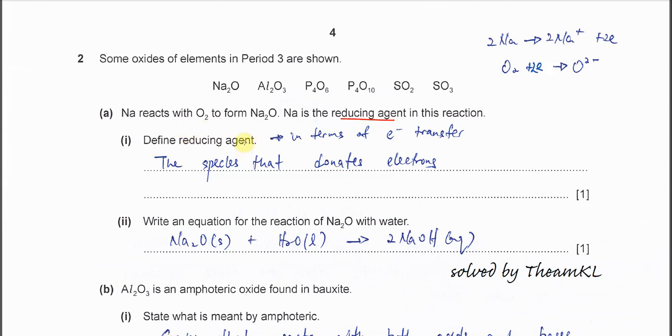When we try to define reducing agent or oxidizing agent, we need to define in terms of electron transfer. You have to answer it's either donate electron or it gains electron. Since sodium is the reducing agent, it means sodium after it reacts with oxygen will form sodium ion, releasing electrons from sodium, and this electron is gained by oxygen which reduces to oxide. That's why we say sodium is a reducing agent because it donates electron.